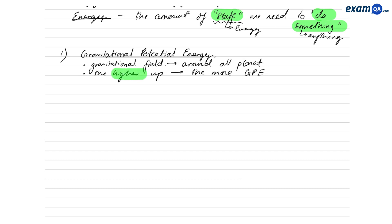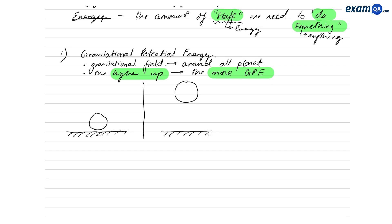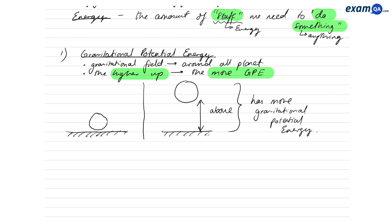The higher up something is, the more gravitational potential energy it has. For example, if this is the floor and I have a ball close to the floor, versus a second instance where the ball is higher up from the floor — this second one is obviously higher up, so it has more gravitational potential energy.